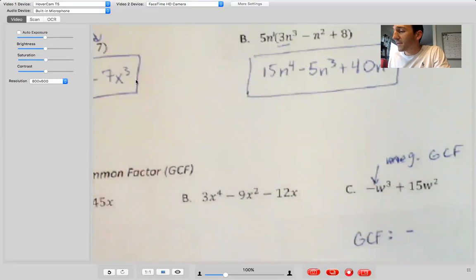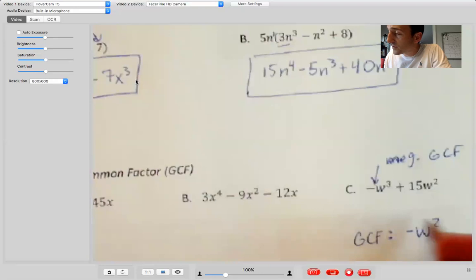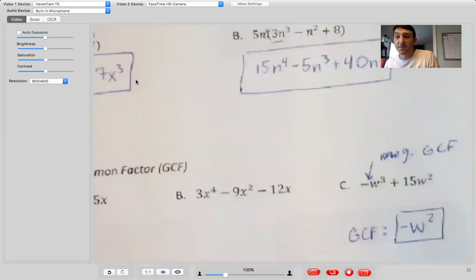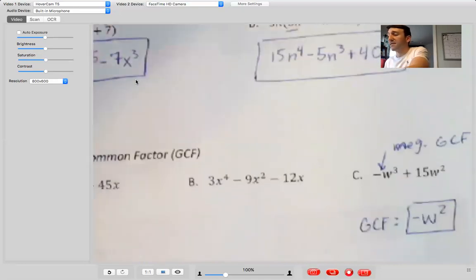So it's negative something. What goes into one in 15? Well, obviously just one, so I'm not going to write negative one, but that's understood with a negative sign. And then what's my lowest power of w, w squared. So my overall GCF is negative w squared. Okay, we'll do a lot more with this when we factor. So I'm going to skip B in order to save a little bit of time.